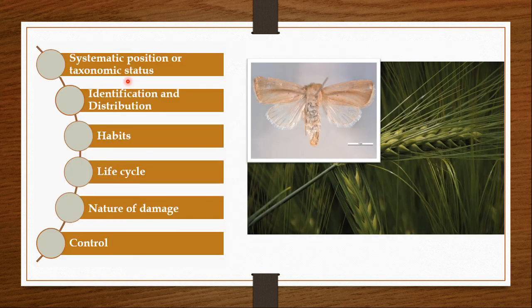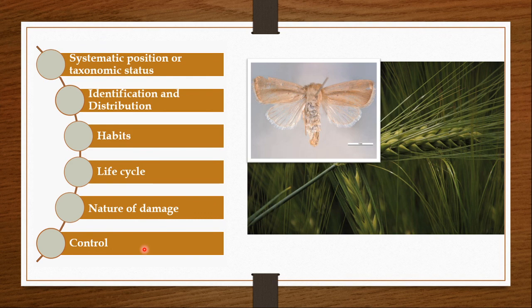Like we do for all pests, here also we will start with the systematic position or taxonomic status of Sesamia inferens. Then we will see how we can identify this pest and its distribution, its habits, life cycle, the ways in which it can cause damage to our crops, and the measures that can be taken to control this pest.